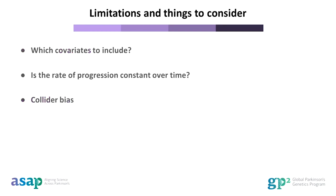To wrap up, we will talk about some limitations and things to consider when you are running your progression GWAS. First, you need to think about what covariates to use in your model, as well as whether the rate of progression is constant over time. If the rate of progression changes over time, then it is important to think about what disease stage your participants are at baseline and whether this differs between cohorts. Another thing to consider is collider bias. Because we have selected only Parkinson's patients based on disease status for our analysis, this may induce biased associations. There may be factors that are actually independent which show correlations in your dataset because you have selected cases only, and this can influence the results of your progression analysis. This is a complex issue and I have linked some key papers in the recommended readings.